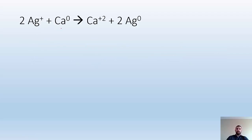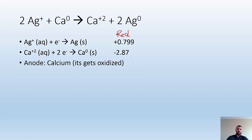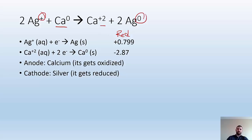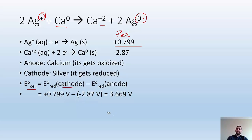Let's work through an example: silver reacting with calcium gives calcium ion and silver metal. I look up the two reduction potentials. Calcium is oxidizing from zero to plus two — so calcium is the anode. Silver is getting reduced from plus one to zero — so silver is the cathode. The potential of the cell equals the reduction potential of the cathode (silver) minus the reduction potential of the anode (calcium). Plugging in the values, you get 3.669 volts — that is the cell potential.